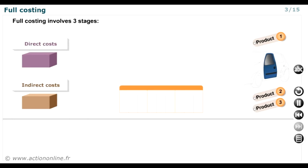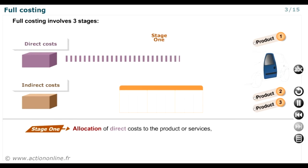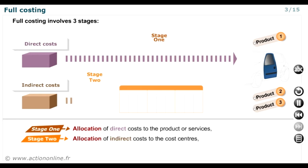Full costing or absorption costing involves three stages before arriving at full cost or total cost, for all products or services linked to a given activity and for a given period. First stage: allocating direct costs to products or services. Second stage: dividing indirect costs into various groupings — the cost centres.